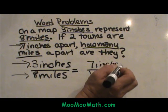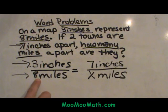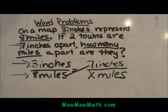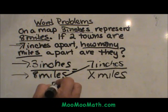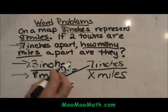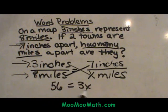Once you get it set up, you just use a simple cross product to solve it. So eight times seven — the bottom of one times the top of the other — is 56. And then three times X is 3X. Then you just solve by dividing both sides by 3.